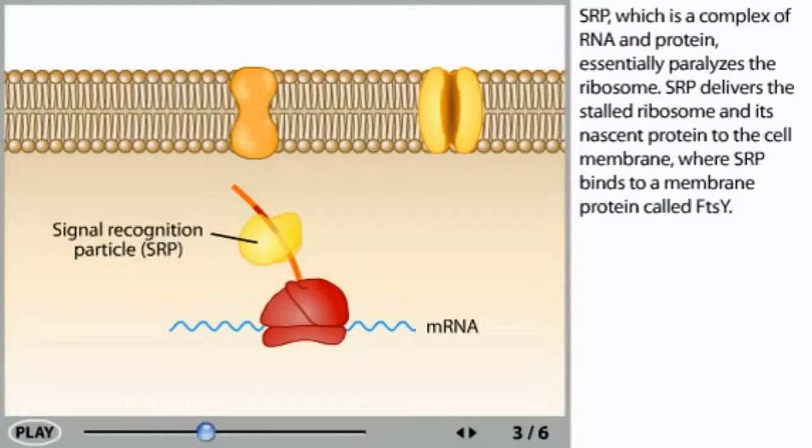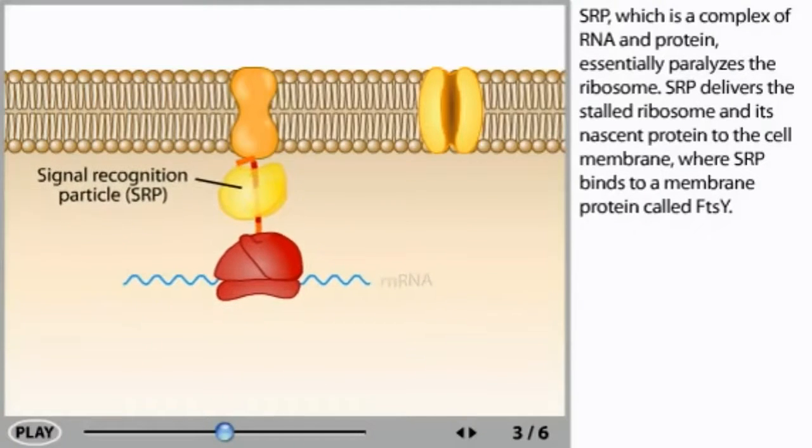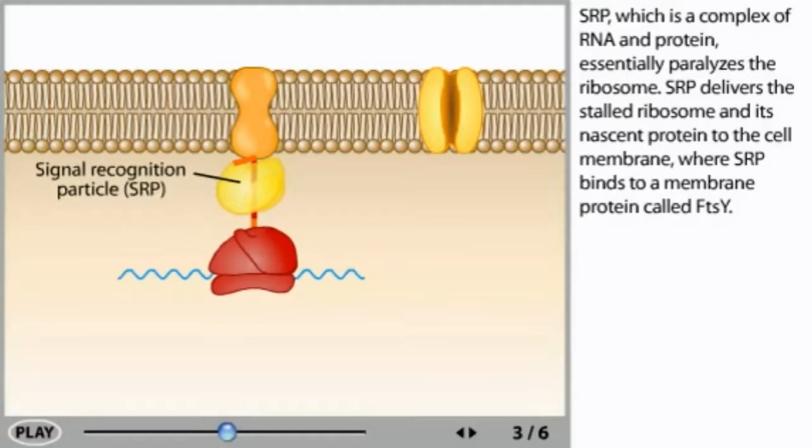SRP, which is a complex of RNA and protein, essentially paralyzes the ribosome. SRP delivers the stalled ribosome and its nascent protein to the cell membrane, where SRP binds to a membrane protein called FtsY.